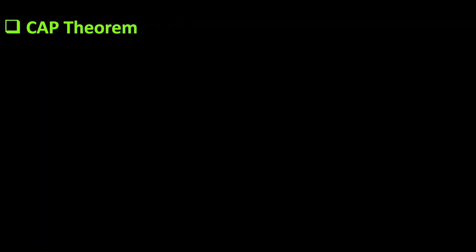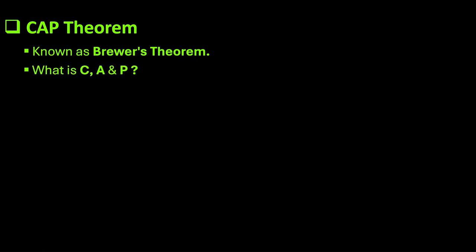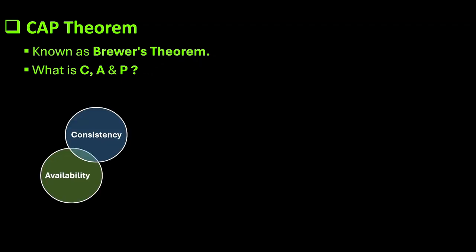The CAP theorem is also known as Brewer's theorem. Now let's look at what C, A, and P stand for. First is C for Consistency, second is A for Availability, and lastly it is P for Partition Tolerance.